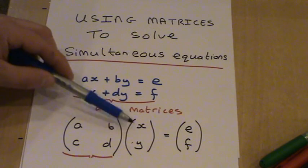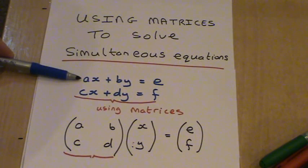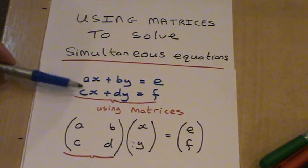So you can see a times x plus b times y equals e, and that's our first equation. And c times x plus d times y equals f, and that's our second equation.